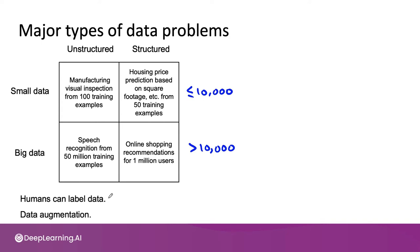For many unstructured data problems, people can help you to label data, and data augmentation — such as synthesizing new images or new audio — can also help. There are some emerging techniques for synthesizing new text as well. For manufacturing vision inspection, you can use data augmentation to generate more pictures of smartphones. For speech recognition, data augmentation can help you synthesize audio clips with different background noise.